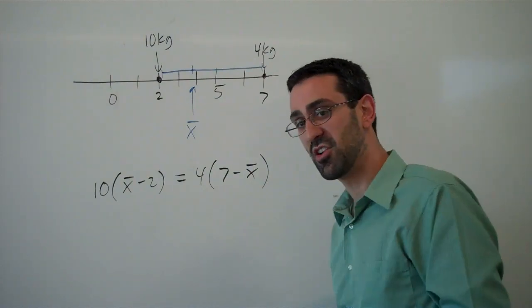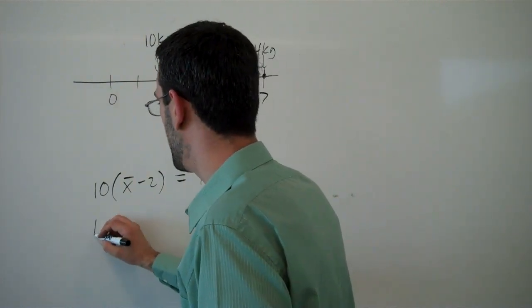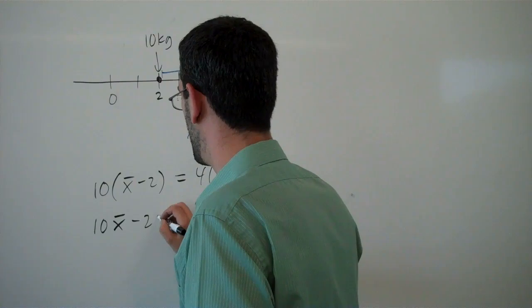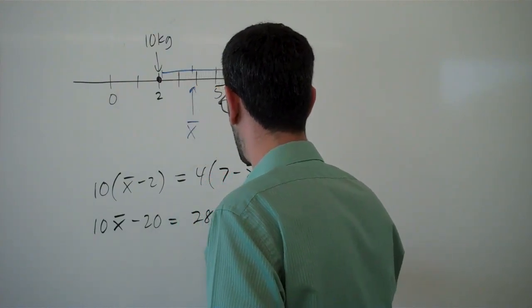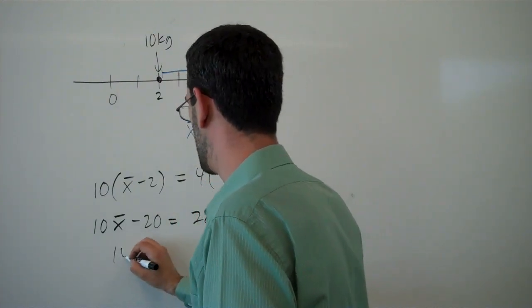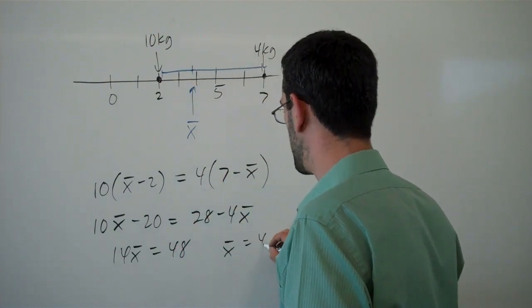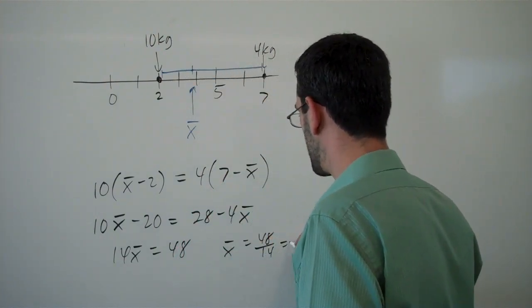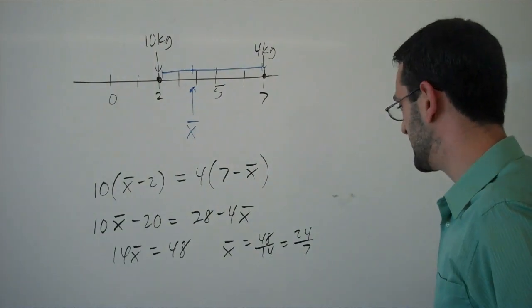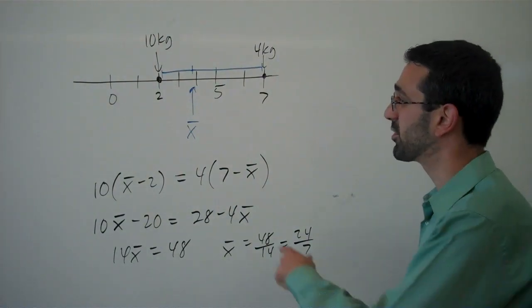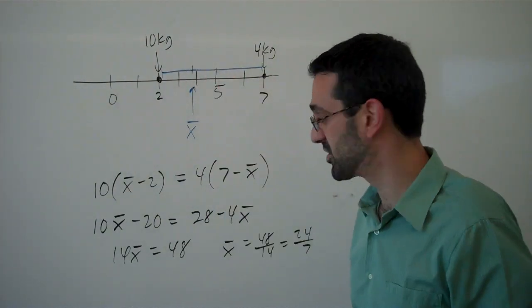And this would let us solve for that center of mass, and we could go ahead and do that quickly here, just for the fun of it. So, it looks like we get x̄ is 48/14, or 24/7, which is a little more than 3. Yeah, okay, I was pretty close.